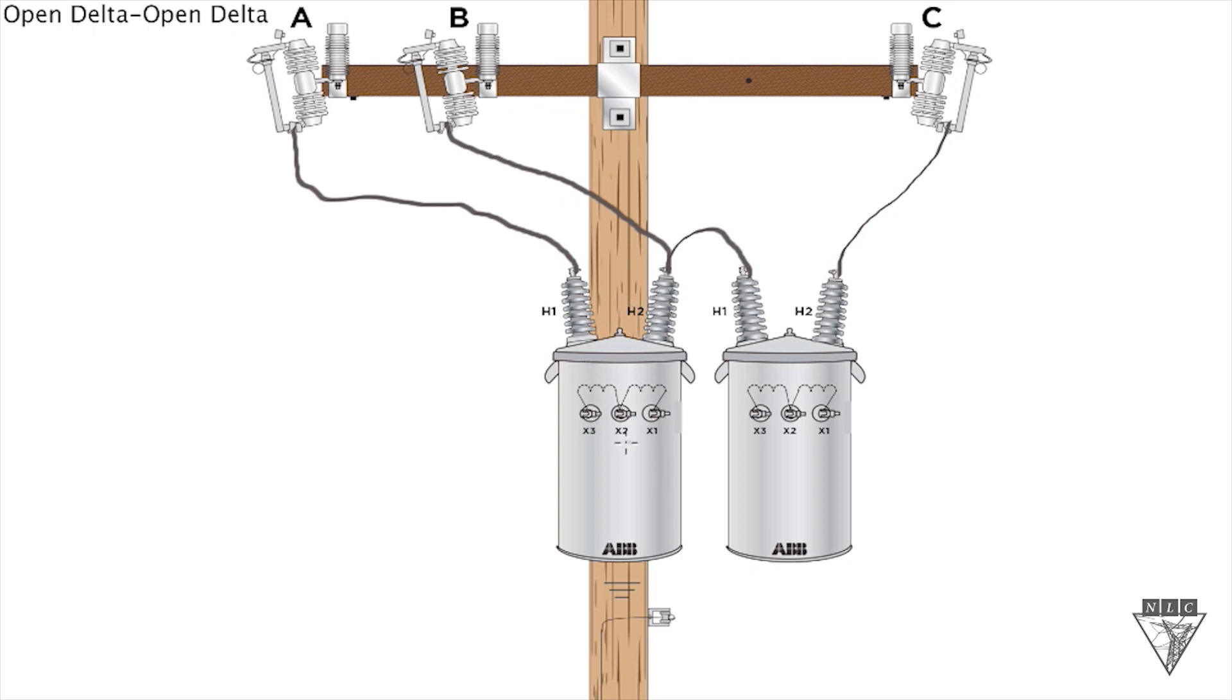Let's go to our secondary connection. On the secondary side, we're only going to utilize one of the X2 bushings and we're going to do it on the center one. Take it straight down to ground and that's our secondary neutral connection.